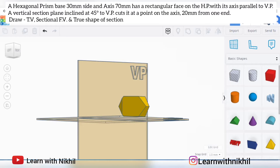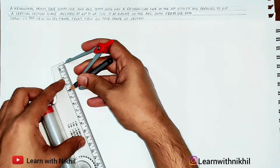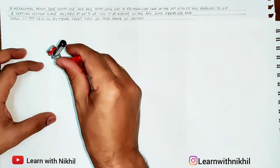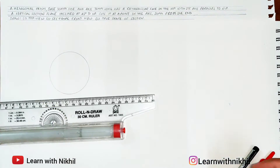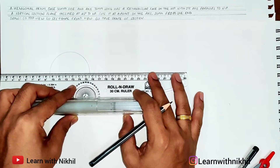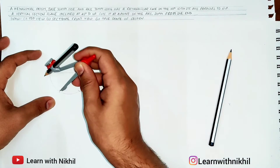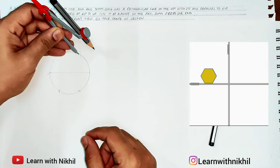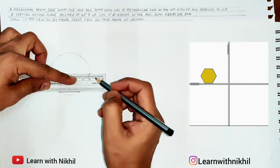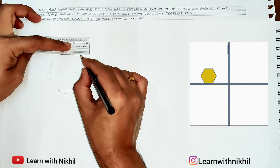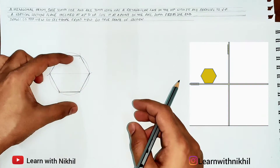Now let's begin the actual drawing. First we draw the side view, which is the hexagon. I've taken the radius as 30 mm, drawn a circle with that radius, and marked a horizontal line. Starting from that point, I cut the sides of the circumference. The rectangular face must rest on the HP, so the base of the hexagon is a straight line — this line represents the HP.